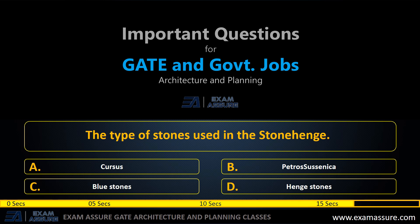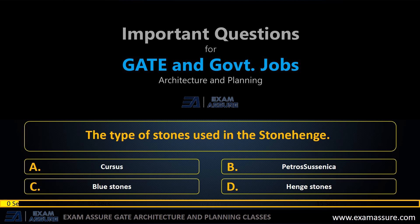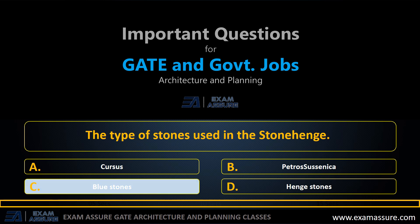Next question: what type of stones were used in Stonehenge? Option A: Cursus, option B: Petrossusanica, option C: Blue stones, option D: Hinge stones. The correct answer is Blue stones.